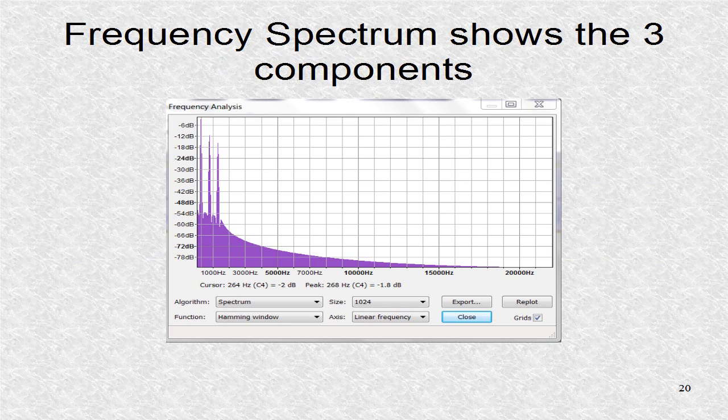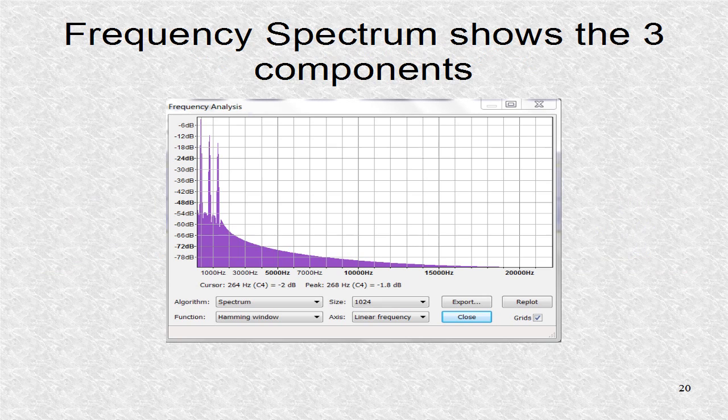By selecting any large portion of audio, or even the entire 5 seconds of audio, and going to the analyze menu option of plot spectrum, we get the frequency spectrum with three components.